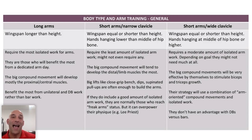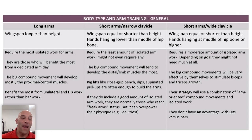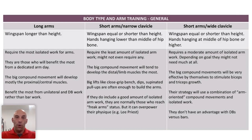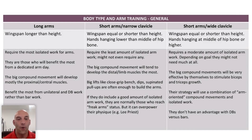Long limb lifters also benefit most from doing unilateral or dumbbell work for arms training. On the other side, people with shorter arms and a narrow clavicle — naturally narrower shoulders — will typically have a wingspan equal to or shorter than their height, with hands hanging lower than the hip bone. Because if your shoulders are narrow, they make up a smaller proportion of your wingspan, effectively meaning your arms are relatively longer compared to someone with short arms and a wide clavicle.